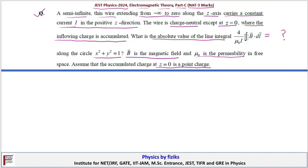So we will consider a semi-infinite wire along the z-axis which extends from minus infinity to point z equals zero. And here we are assuming that current flowing in the wire is I and charge is accumulated at this point.